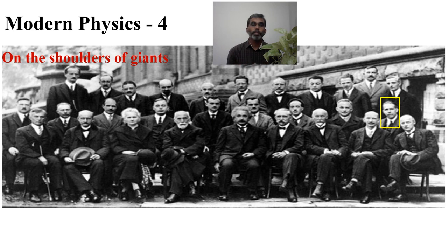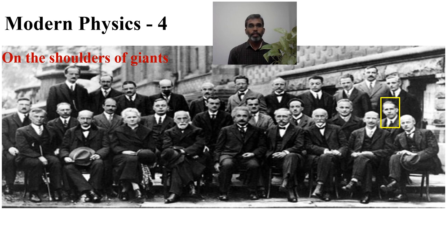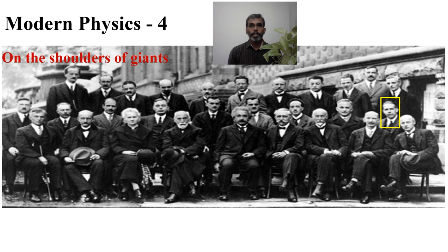Rutherford's model failed to explain hydrogen spectra which was found to be line spectra, while Rutherford's classical model spoke about continuous spectra from atoms. So to settle the issues with Rutherford model of atom, Bohr introduced a quantum model of atom which predicted stationary orbits and a few postulates to explain the behavior and response of the atoms. We had seen that at greater extent last class.